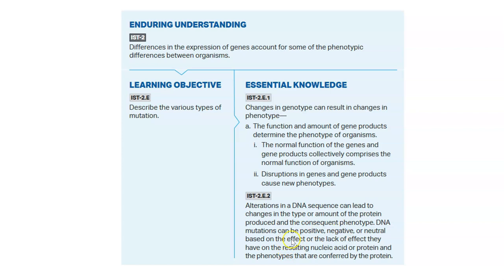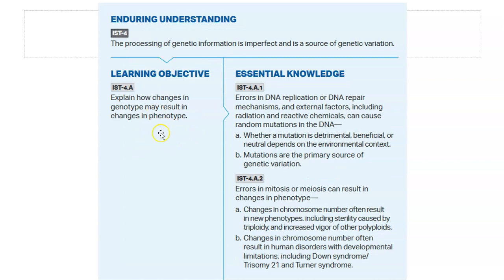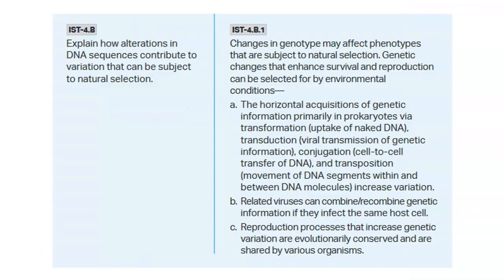DNA mutations can be positive, negative, or neutral based on the effect or lack of effect they have on resulting nucleic acid or protein synthesis. Explain how changes in genotype may result in changes in phenotype: errors in replication or DNA repair mechanisms, as well as external factors, can all lead to changes. Errors in mitosis or meiosis can also lead to changes — we talked about nondisjunction and how changes in chromosome number often result in human disorders, including Down syndrome (Trisomy 21), Turner syndrome, and Klinefelter syndrome.